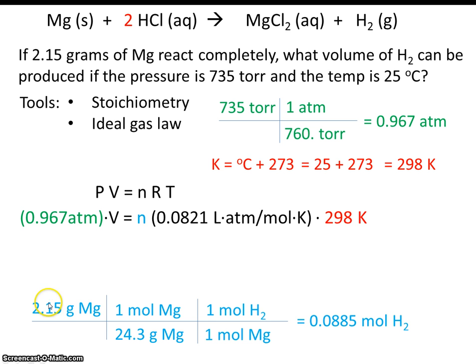So when we carry out the math, if 2.15 grams of magnesium react, that will make 0.0885 moles of hydrogen. Now that we know how many moles of hydrogen will be made, we can plug it in for n.